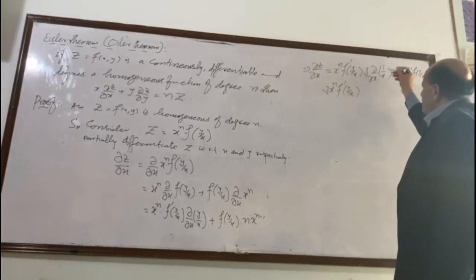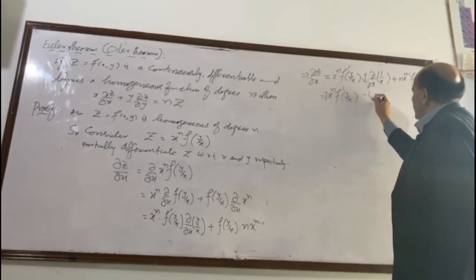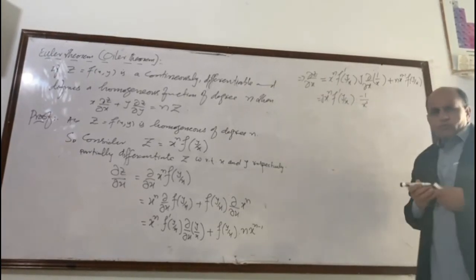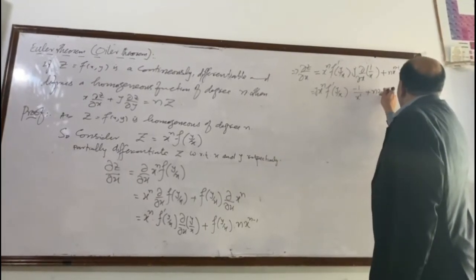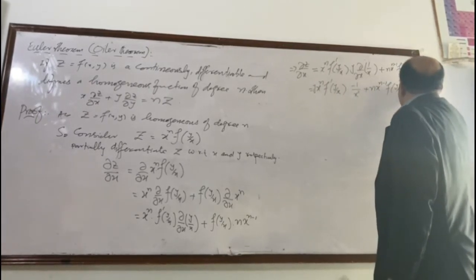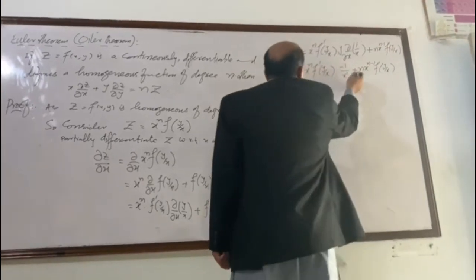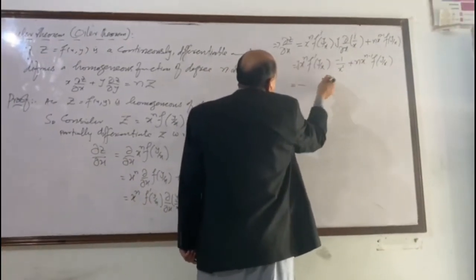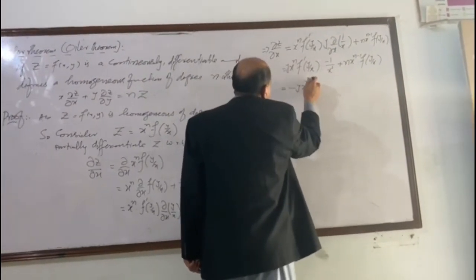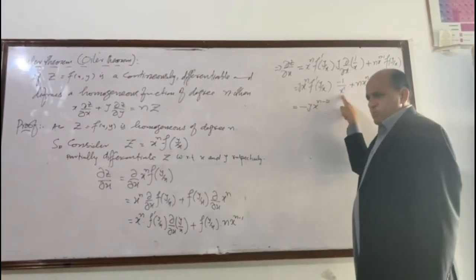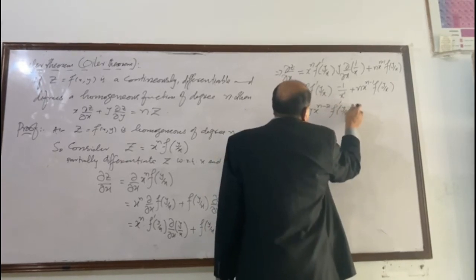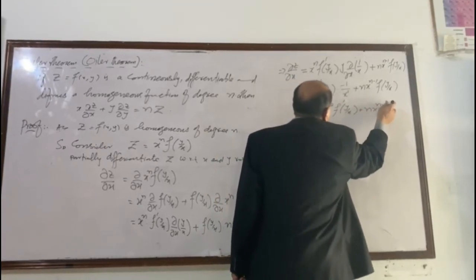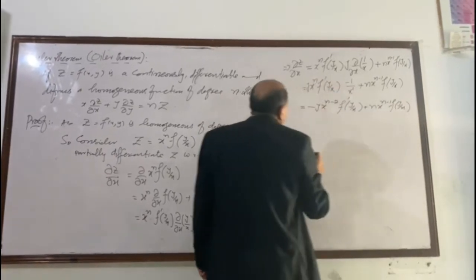Applying the reciprocal rule of derivative — placing a negative with the numerator and squaring the denominator — this gives: n · x^(n−1) · (y/x) · f(y/x). Further simplifying: x^n and x^2 in the denominator combine to give x^(n−2). So ∂z/∂x = −y · x^(n−2) · f′(y/x) + n · x^(n−1) · f(y/x).